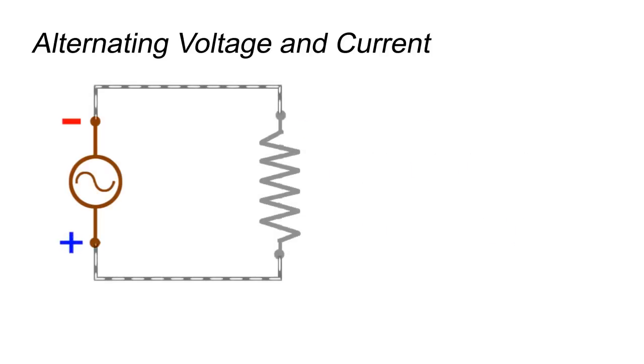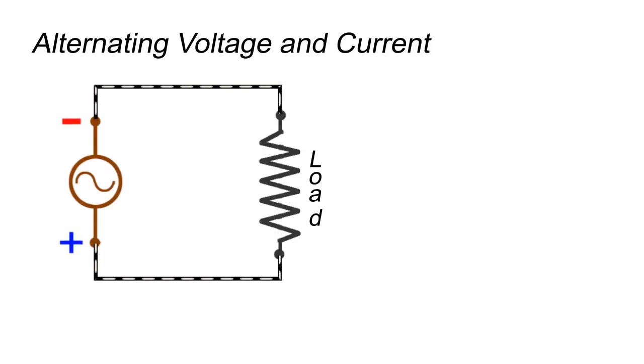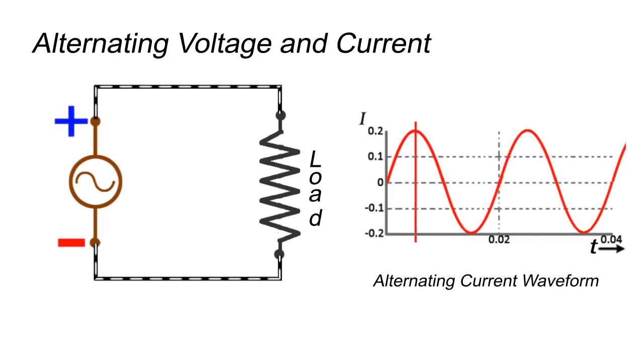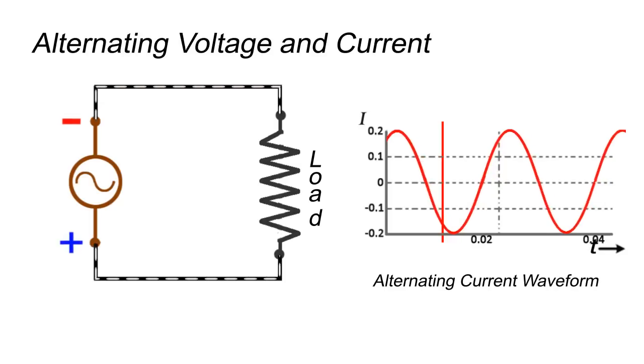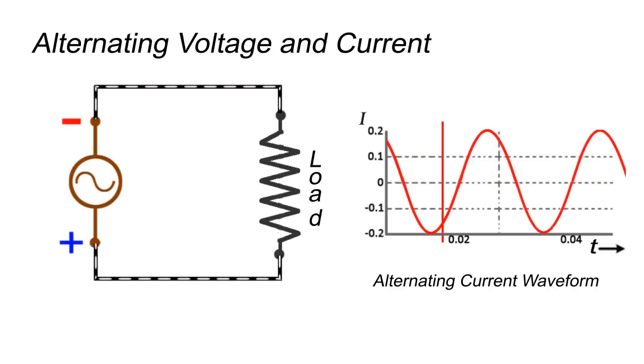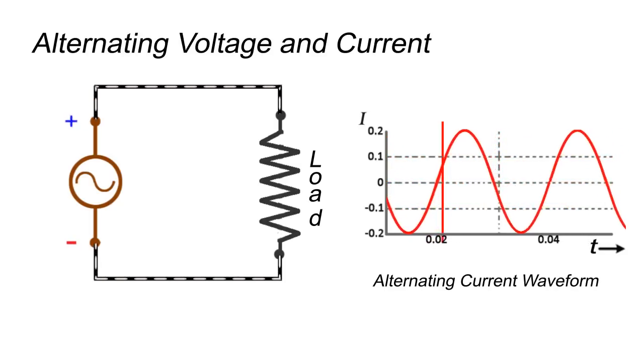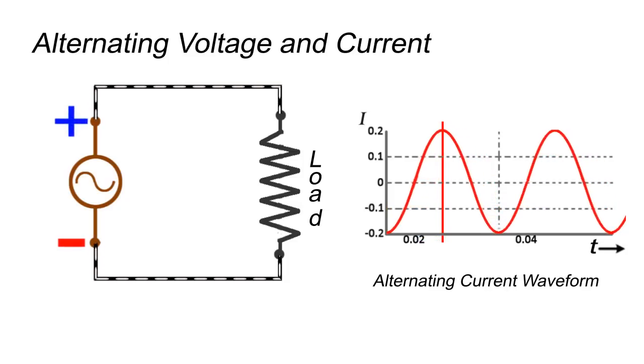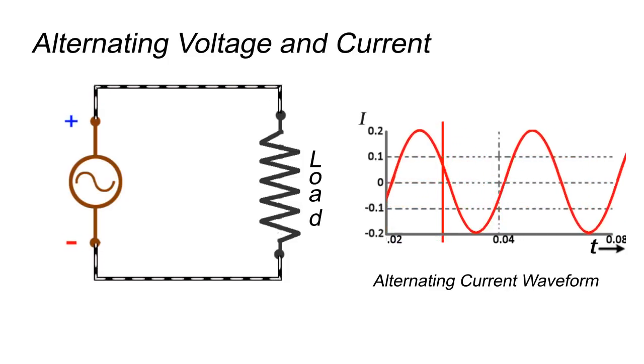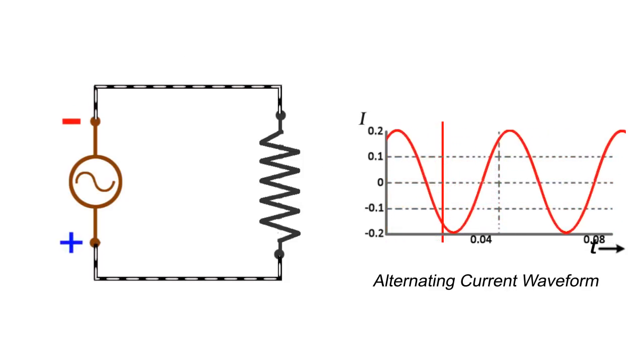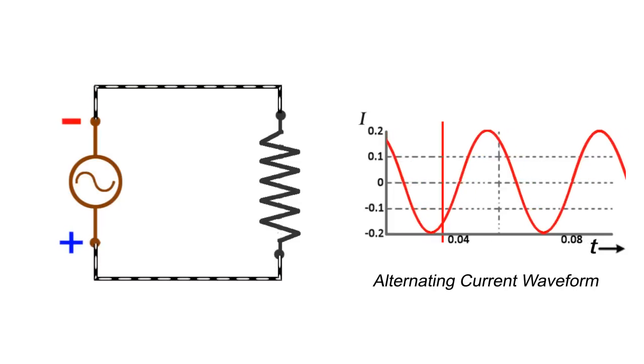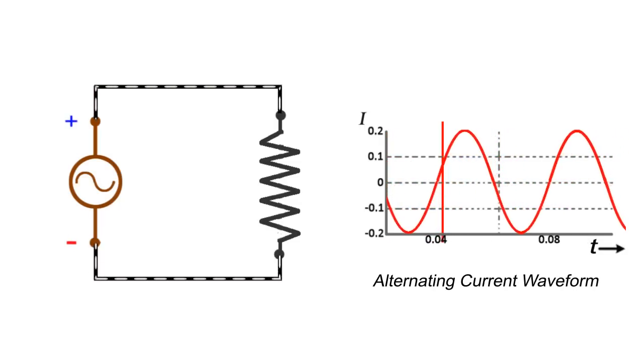Now, if we apply this alternating voltage to an electric load, alternating current gets set up in the circuit. Flow of current follows the nature of applied voltage. This changing current is known as alternating current.